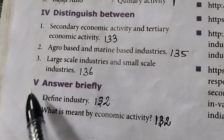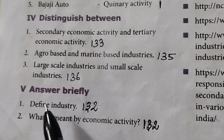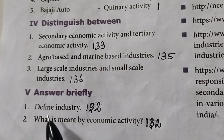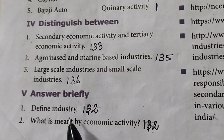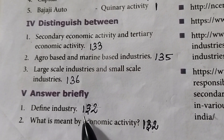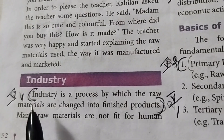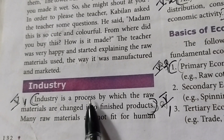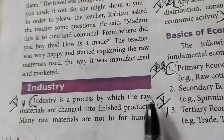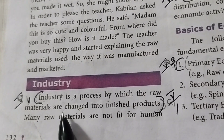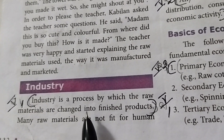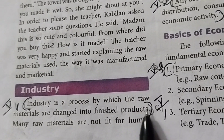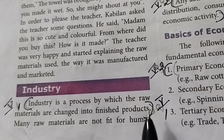Roman numeral five: Answer briefly. First question — define industry. Take page number 132. Industry is a process by which raw materials are changed into finished products.